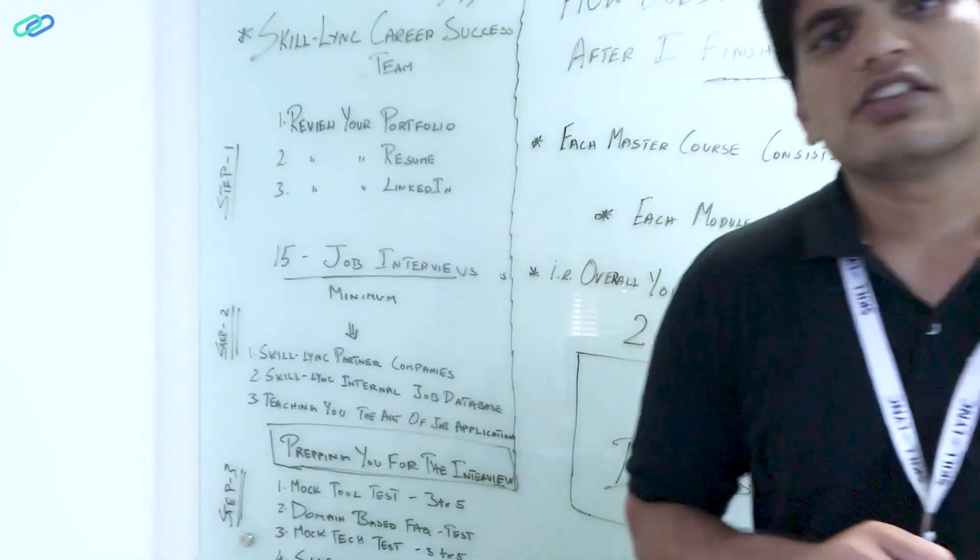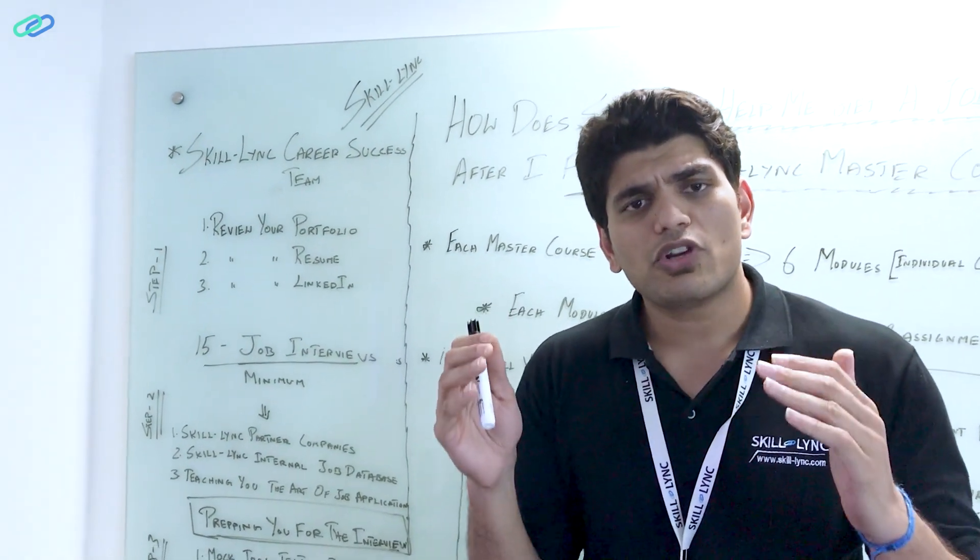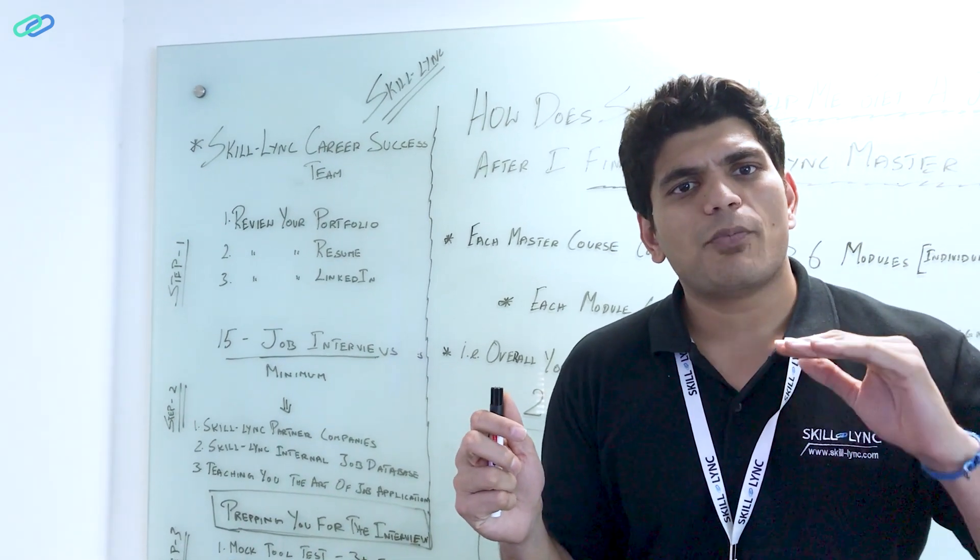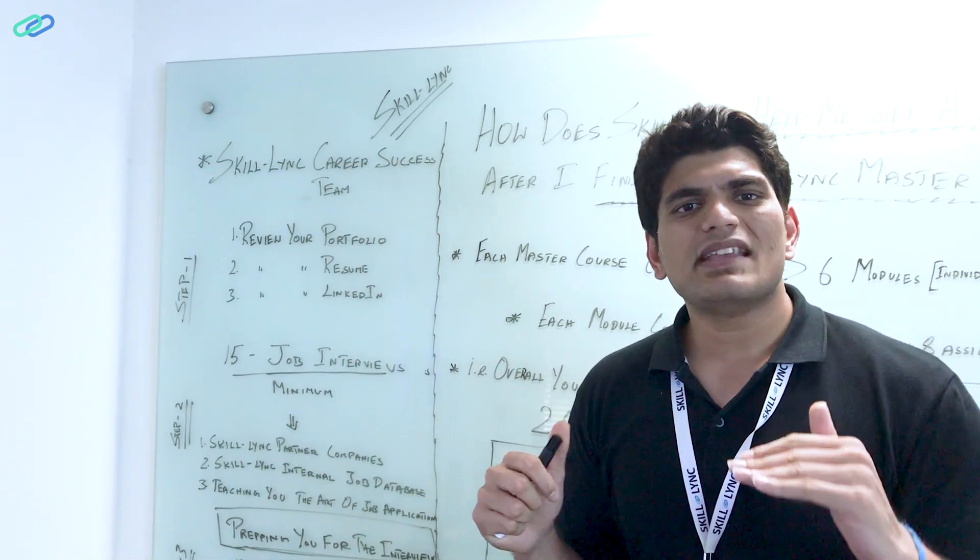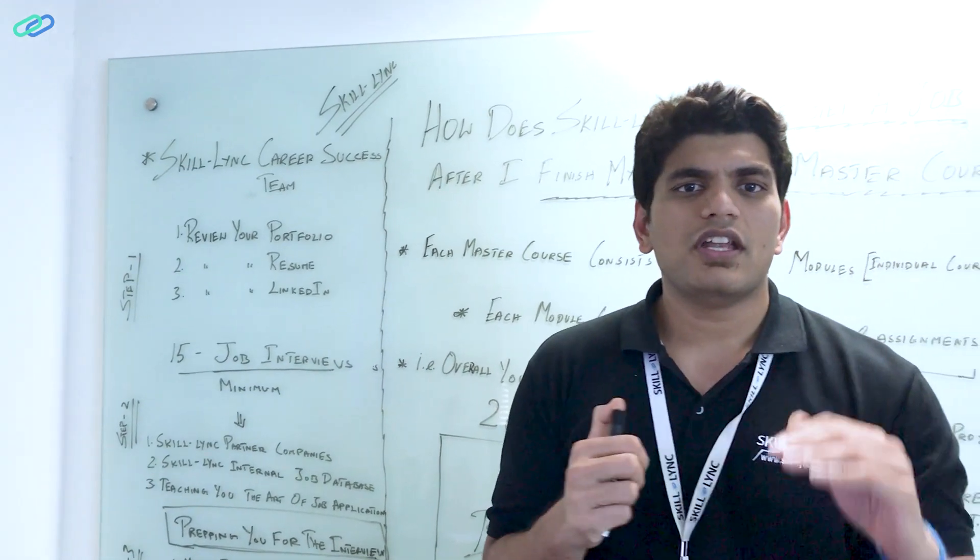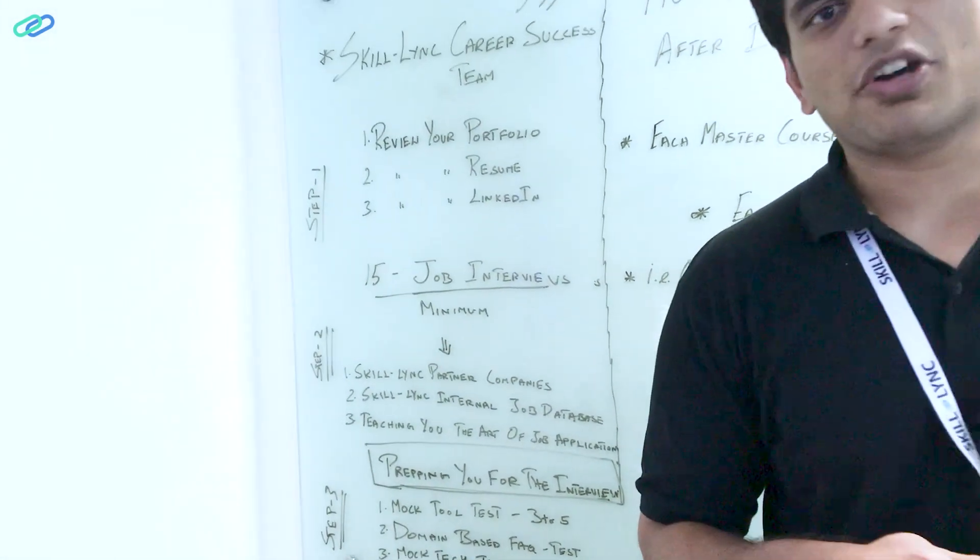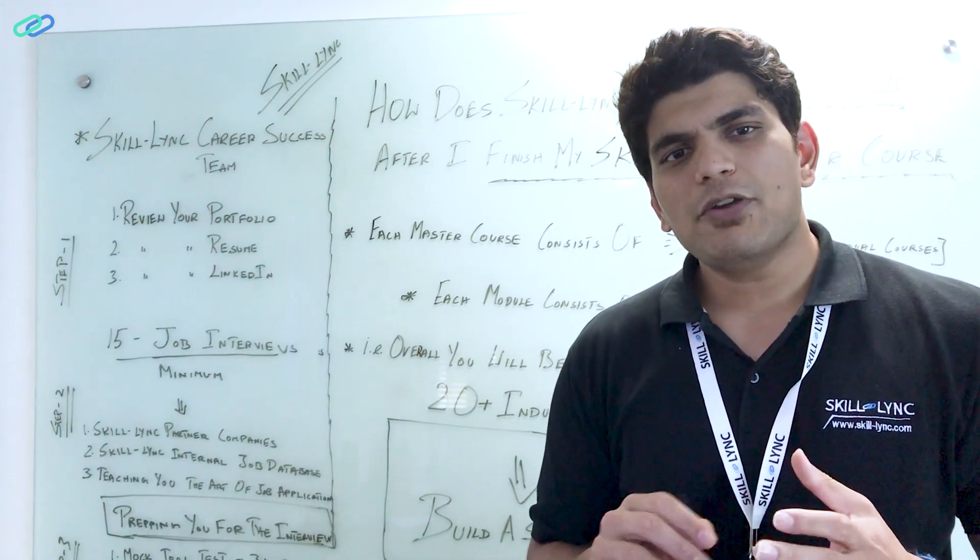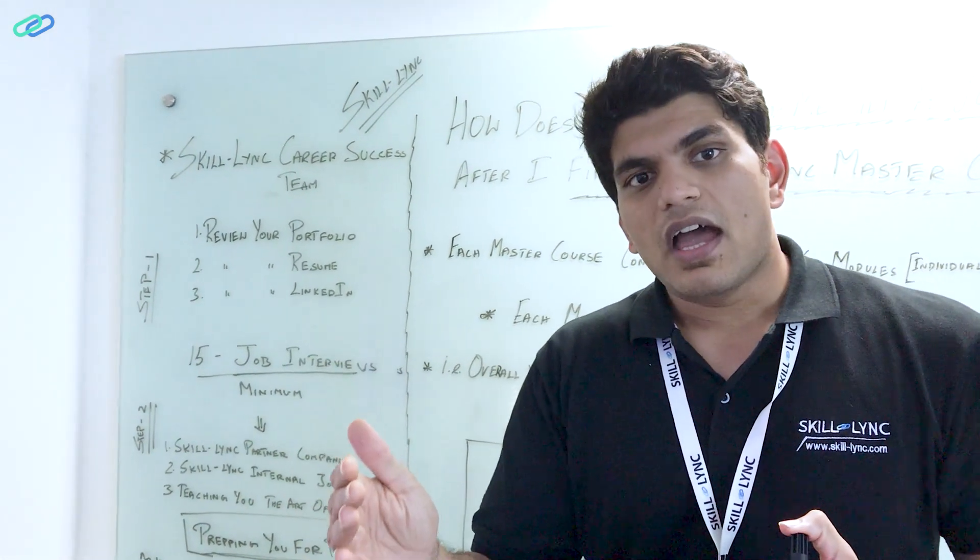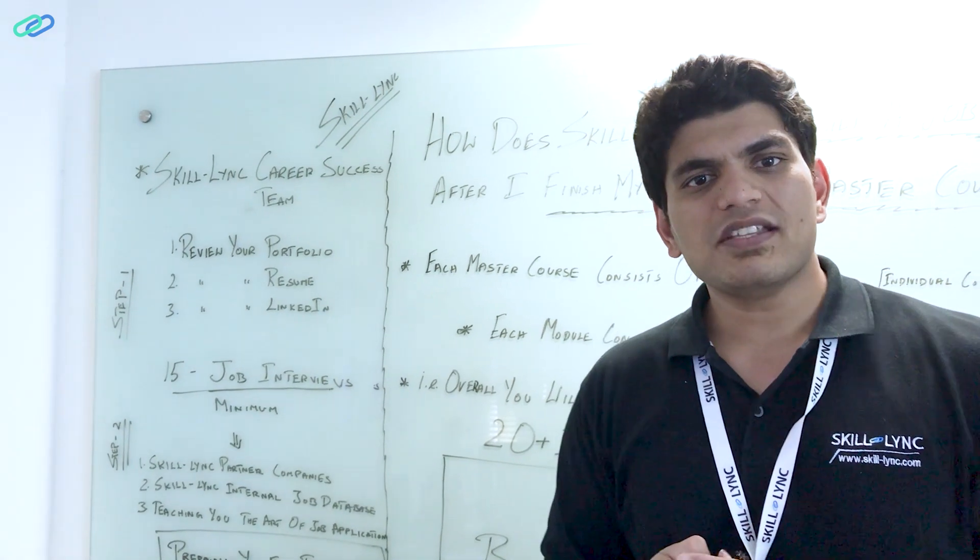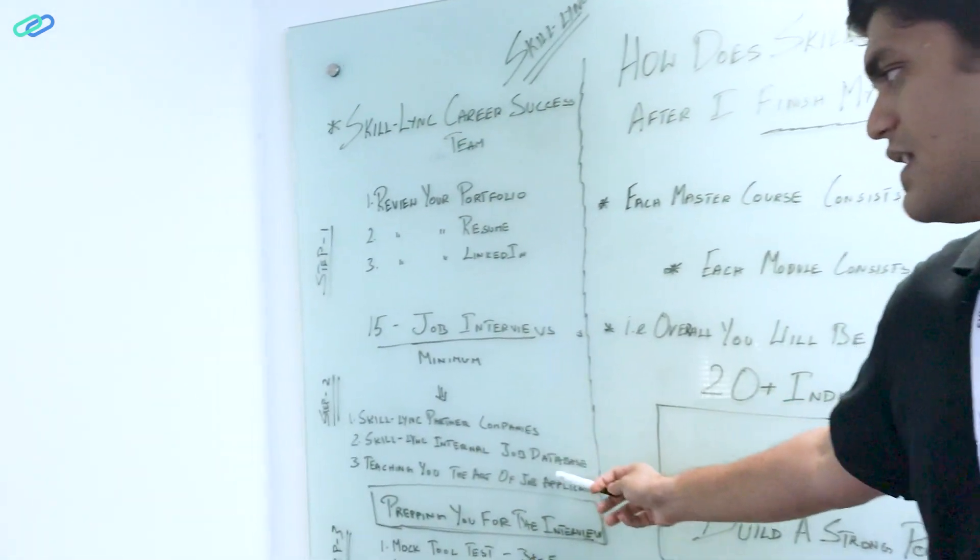Then Skilllink has an internal job database. Skilllink basically scrapes the internet for all the jobs posted in mechanical engineering, automotive, and aerospace engineering domains. Any job posted anywhere in India or in the US or Europe, we know that. We will basically send you that job notification if you are in the career success phase. That's step two. Step three is teaching you the art of applying for a job. We not only help you, we also teach you how to do all these things. Why is this important? That in the future, after three years, if you want to look for a job change, you can use the same process that helped you get the first job. These are the three things that we do in step two.